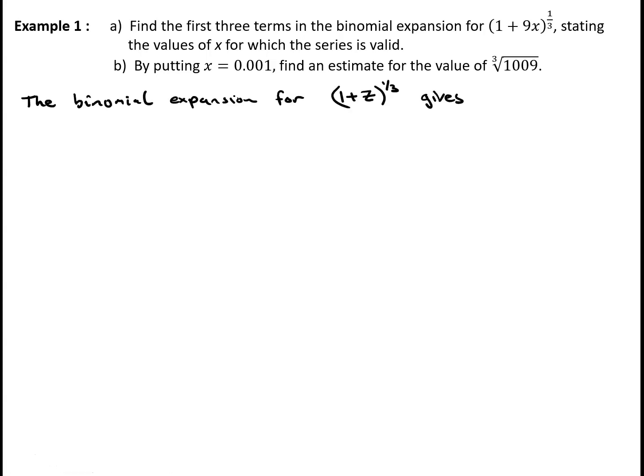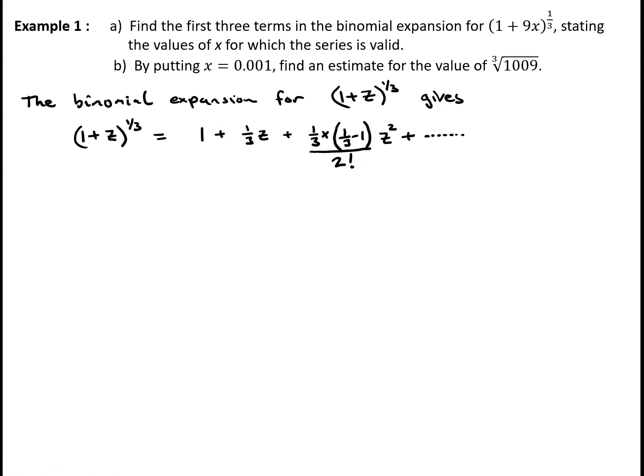The result we had was about the expansion of 1 plus x to the power alpha, or equivalently 1 plus z to the power alpha. So we're going to first find the expansion for 1 plus z to the power of a third. Using the binomial expansion, 1 plus z to the power of a third will be 1 plus a third z, plus a third times a third minus 1 all over 2 factorial times z squared, plus further terms, which simplifies to 1 plus a third z. Then a third times minus 2 thirds gives minus 2 ninths, divided by 2 factorial, giving minus a ninth of z squared, plus higher terms. This is valid provided z lies between minus 1 and 1.